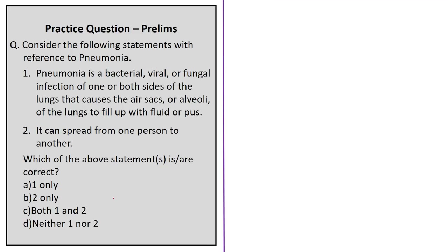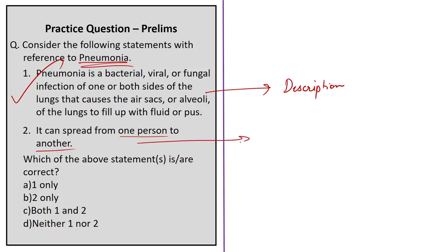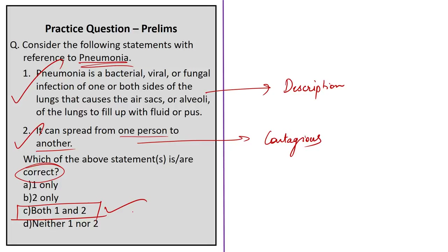A practice question on pneumonia: Statement one — pneumonia is a bacterial, viral, or fungal infection causing the air sacs or alveoli of the lungs to fill up with fluid or pus — is correct. Statement two — it can spread from one person to another through airborne droplets from cough or sneeze — is also correct, as it is contagious. Both statements being correct, the answer is option C, both one and two.